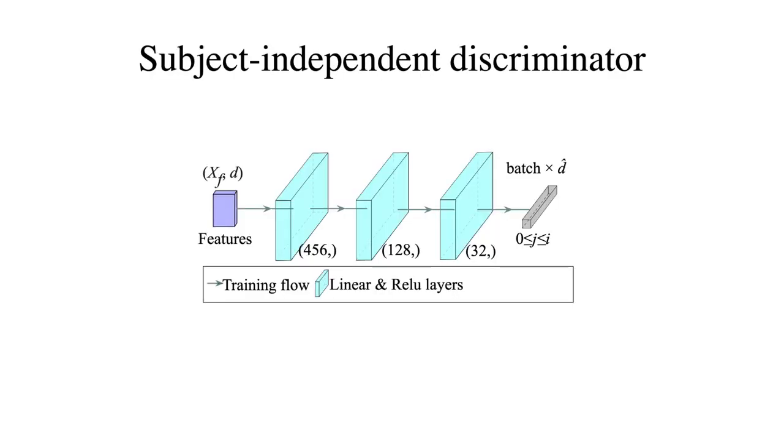We use a subject-independent discriminator to discriminate the subject domains. By doing so, we could reach a model that could predict the swing trajectory without the subject information. It takes the filtered sensor data and the domain information as input, and is optimized through the real domain information to optimize the weights of the neural network.